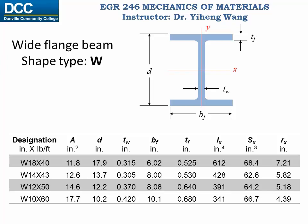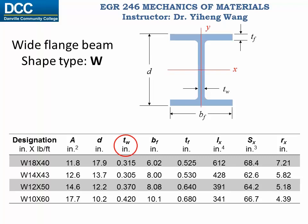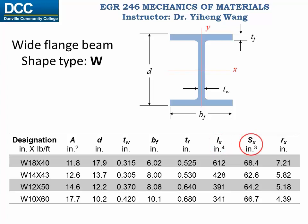The first column is the designation of the shape. 'W' indicates a wide flange beam; the number 18 is the total depth of the beam in inches, and 40 is the nominal weight of the beam — 40 pounds per foot. The other columns include the total cross-sectional area, total depth, width of the web, width of the flange, thickness of the flange, area moment of inertia about the x-axis, section modulus about the x-axis, and lastly the radius of gyration about the x-axis.